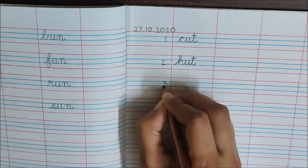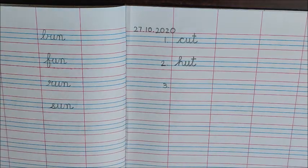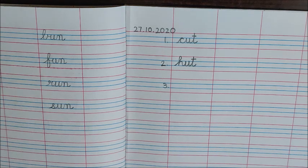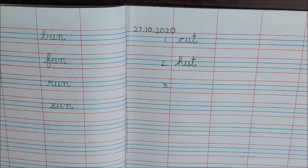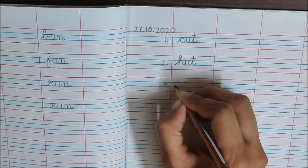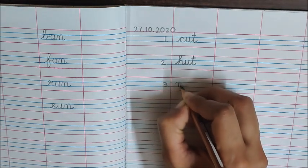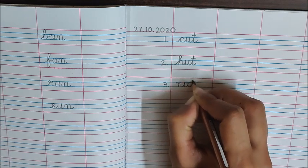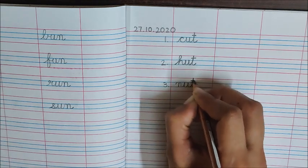Now write down three dot. The next word is nut. Come on children, write nut on your own. Think of the sounds. Have you written? Good. Now I am also writing: nuh, er, ter, nut.